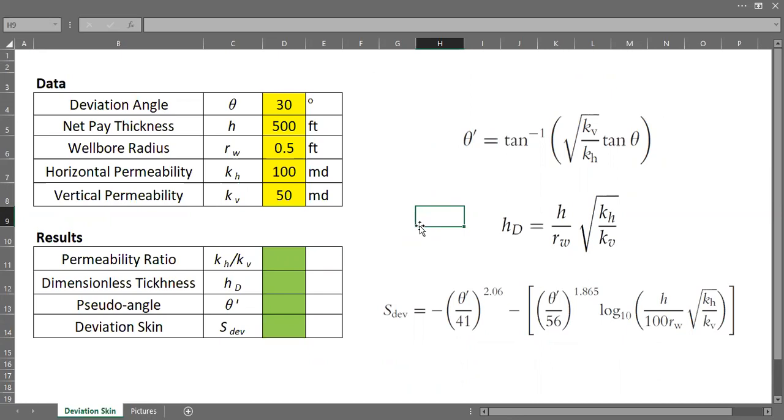For example, we have a deviated well with deviation angle of 30 degrees, and the reservoir has net pay thickness of 100 feet or 500 feet, just for example.